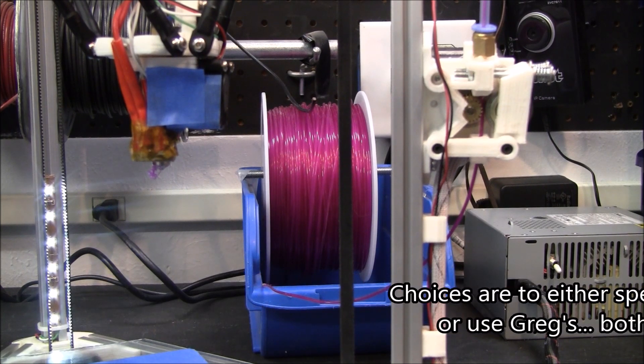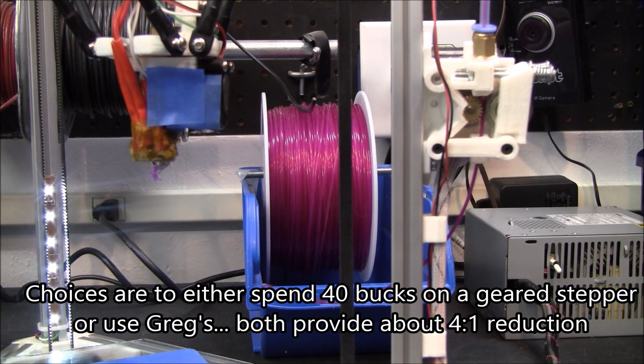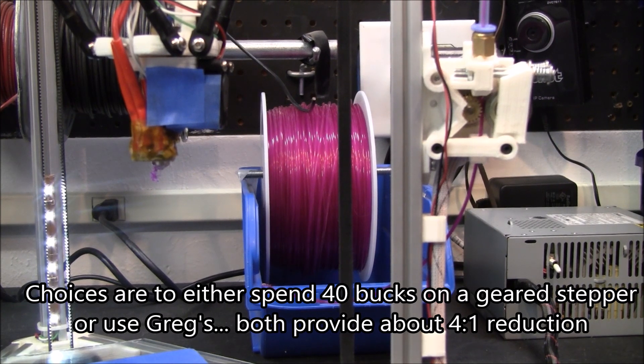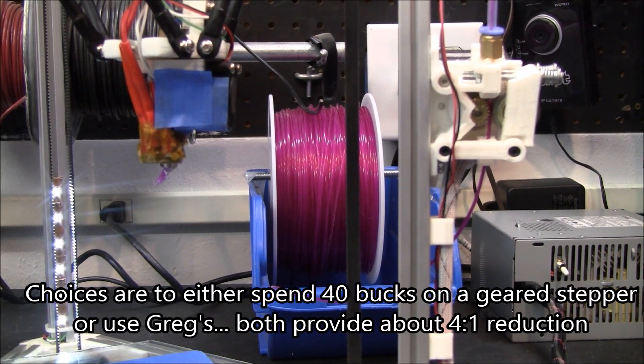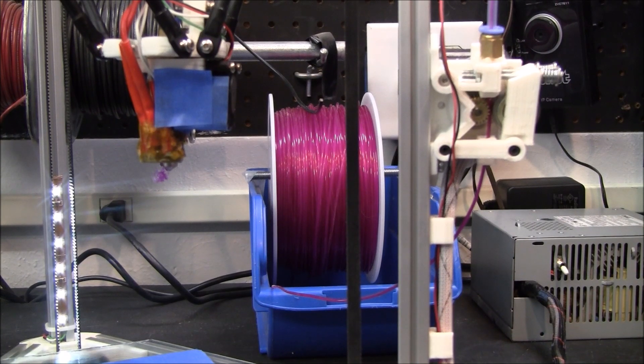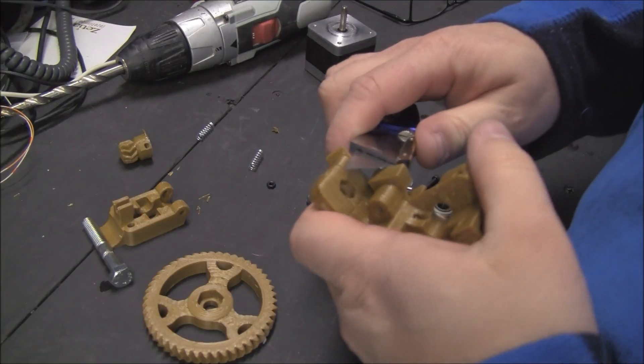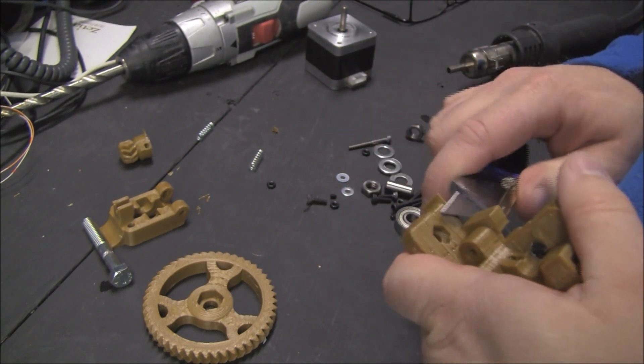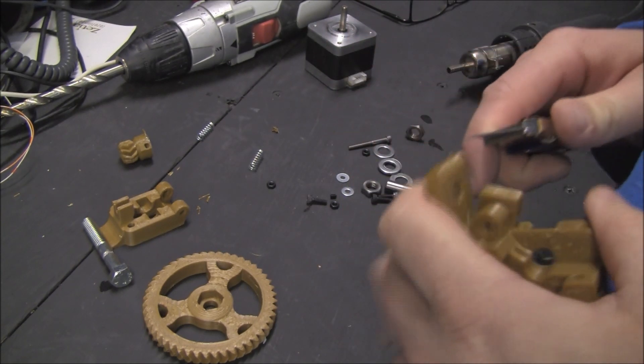These are little ears that keep the plastic from warping while it's being printed.